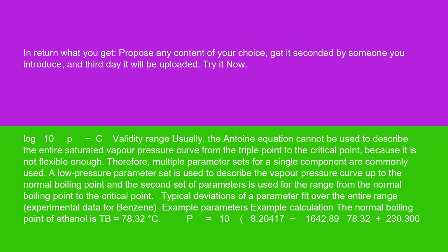Validity range: Usually, the Antoine equation cannot be used to describe the entire saturated vapor pressure curve from the triple point to the critical point because it is not flexible enough. Therefore, multiple parameter sets for a single component are commonly used.